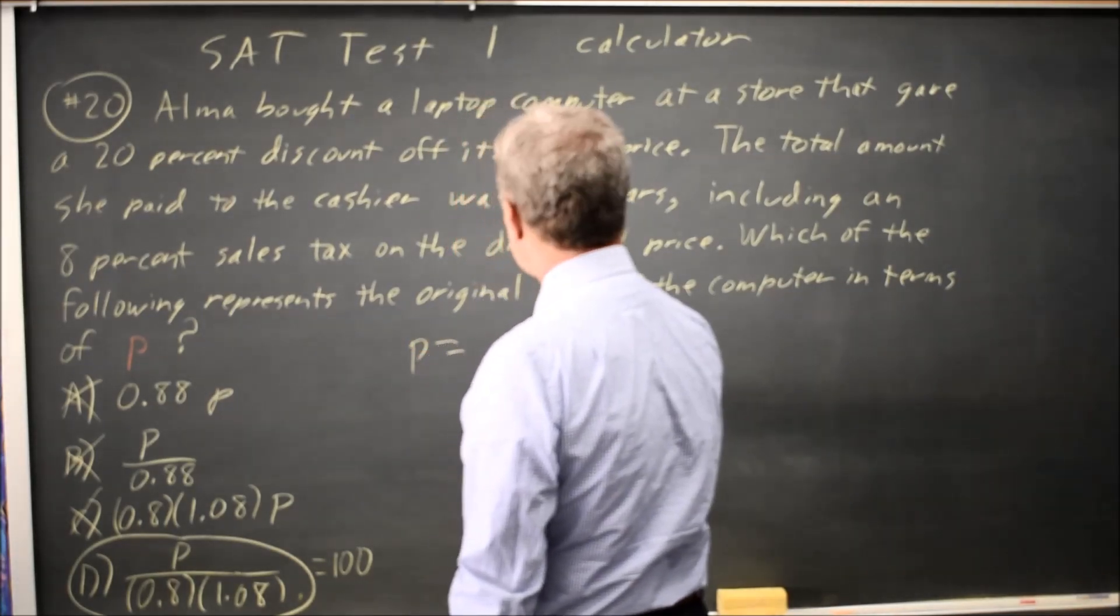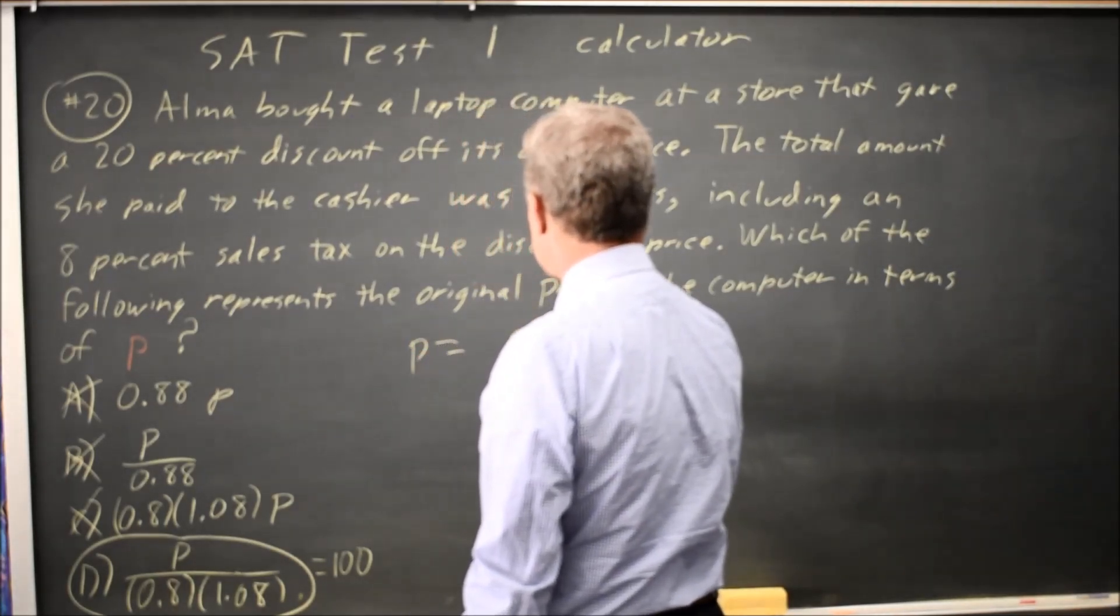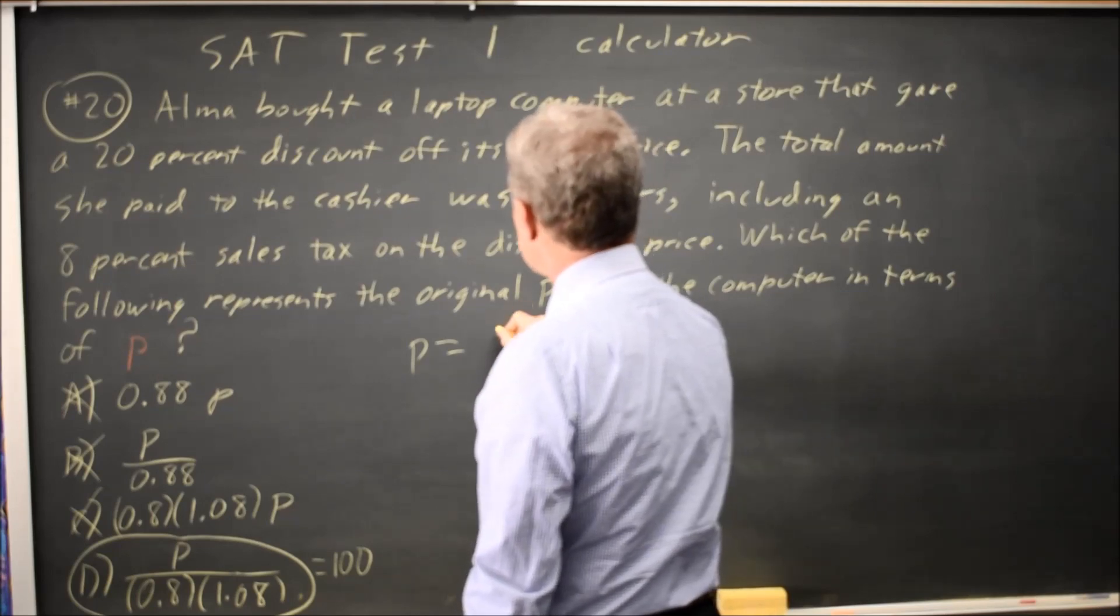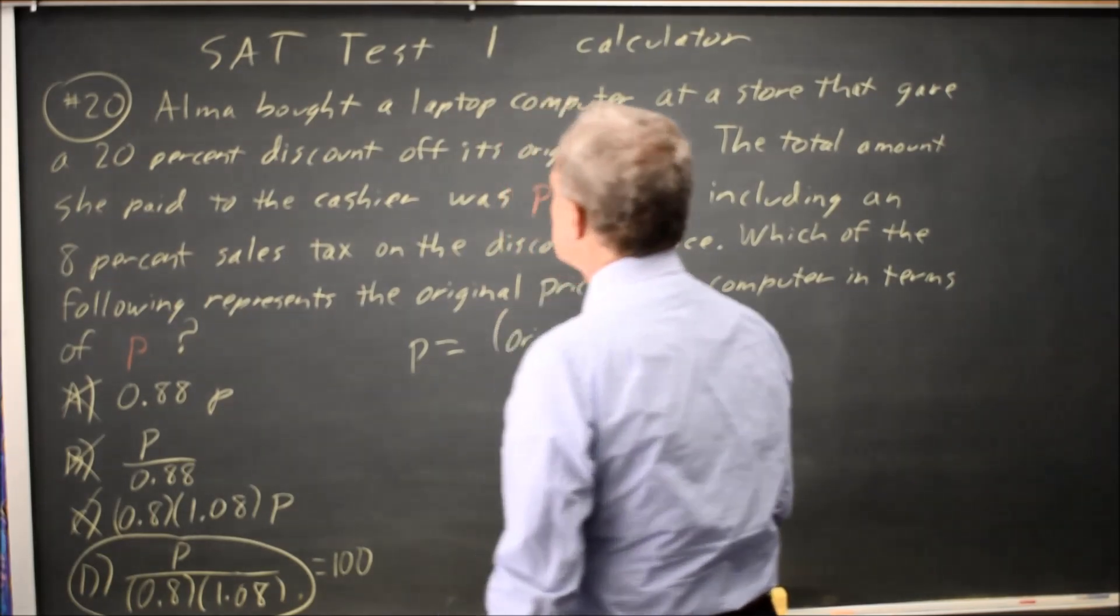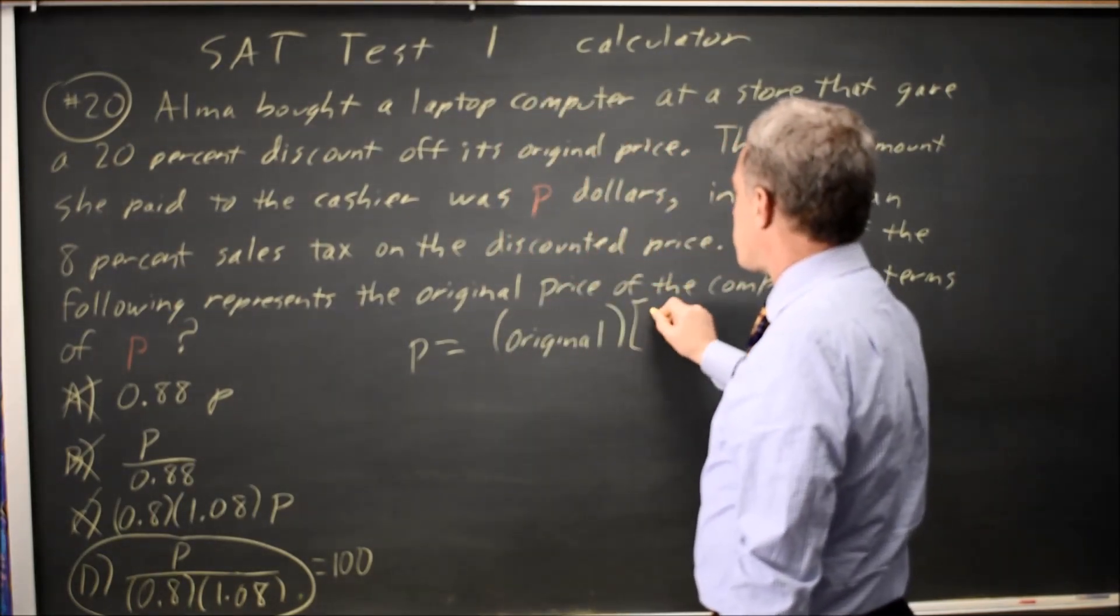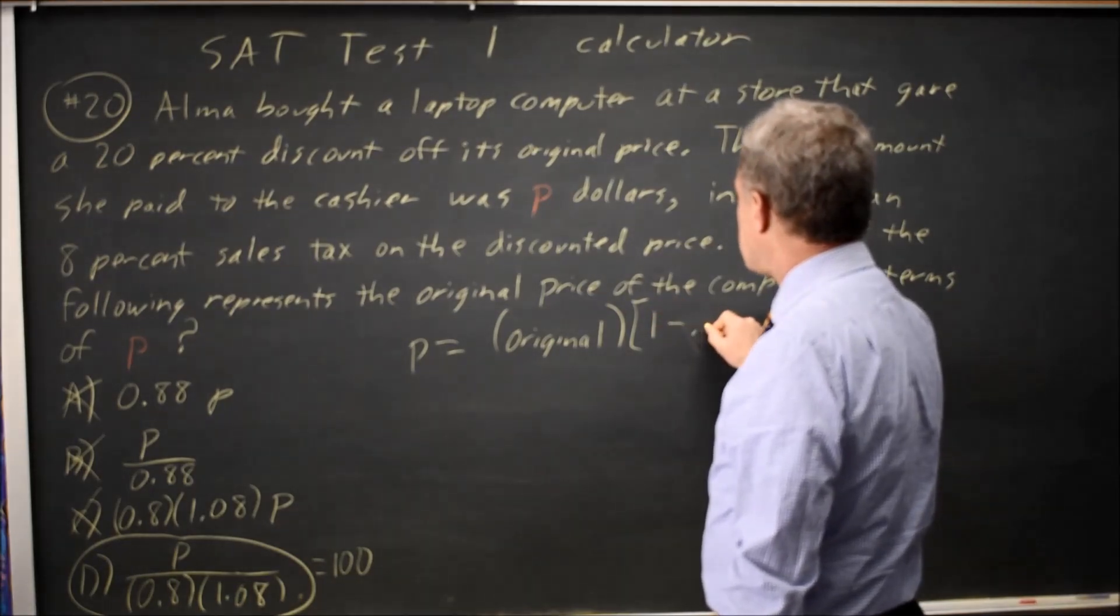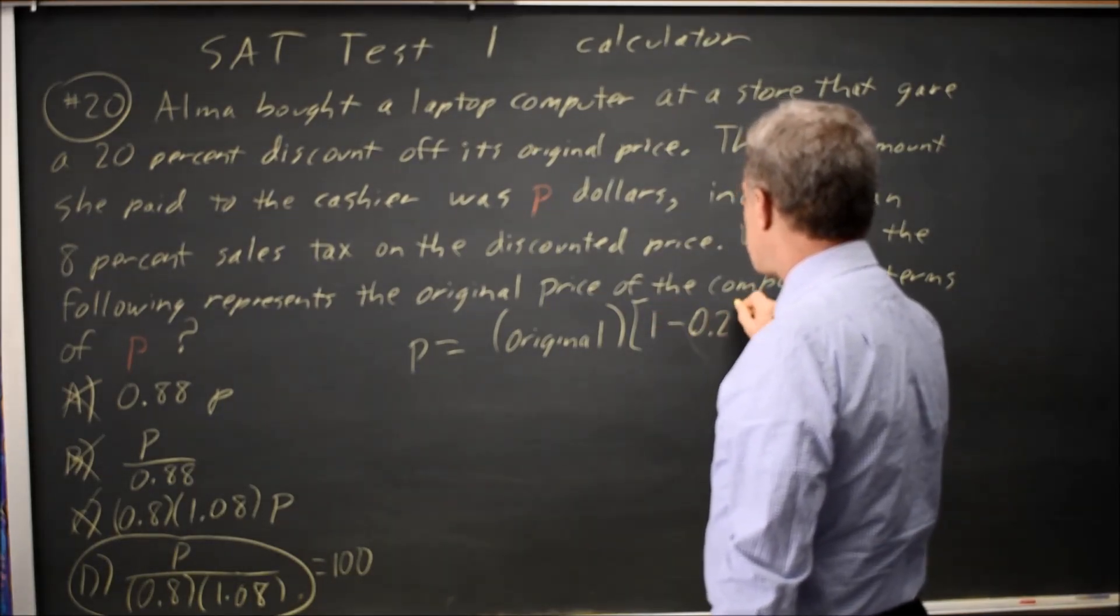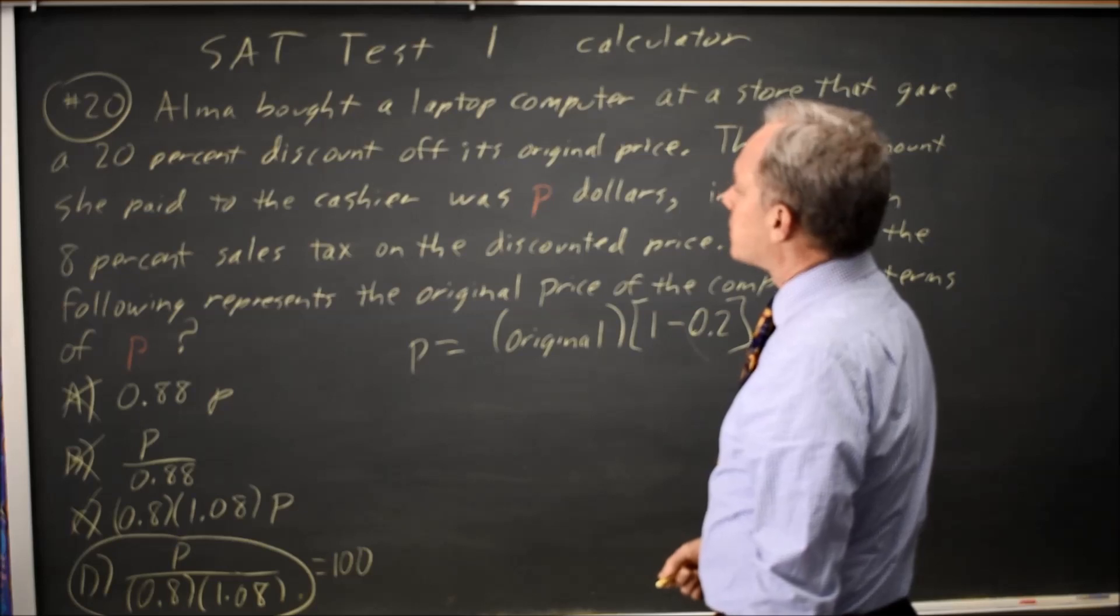...is our original price with a 20% discount. So that's 1 times the original minus 0.2 times the original is a 20% discount.